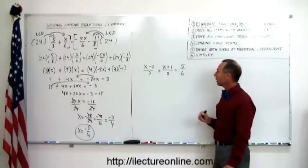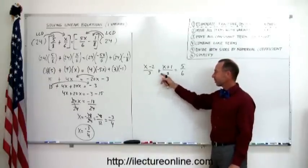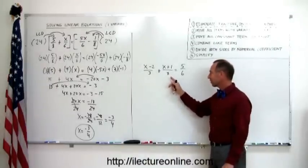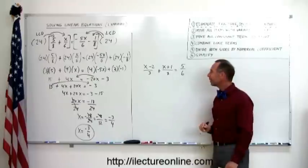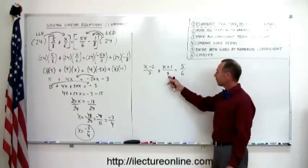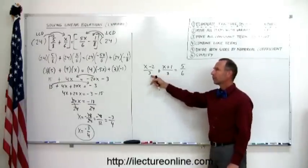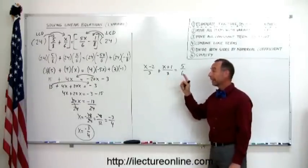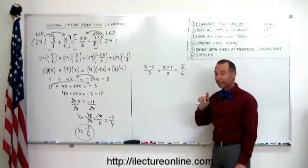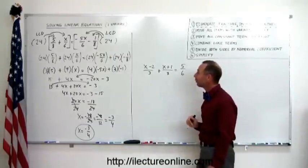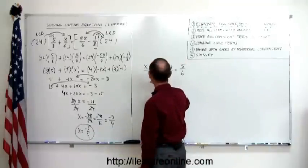If I double the big one, that gives me 16, but 3 doesn't go into 16 and 6 doesn't go into 16, so it can't be that. If I triple the big one, 3 times 8 is 24. 3 goes into 24 — yes it does. 6 goes into 24 — yes it does. So I found my lowest common denominator, which is 24.